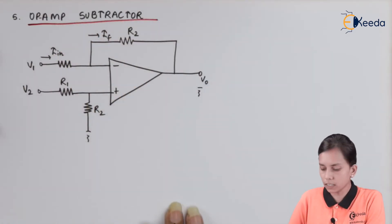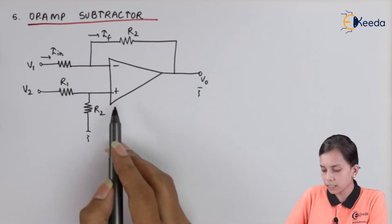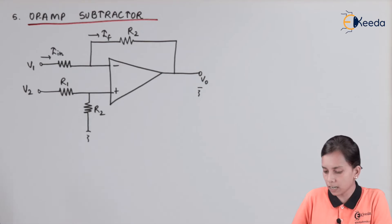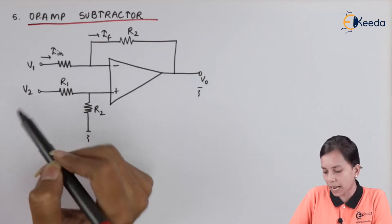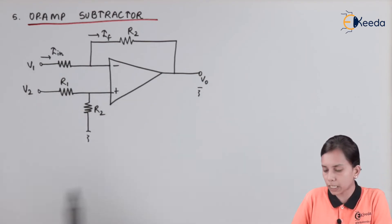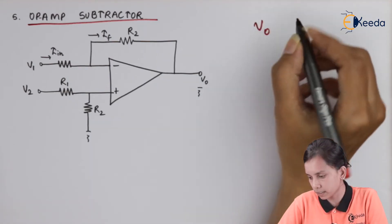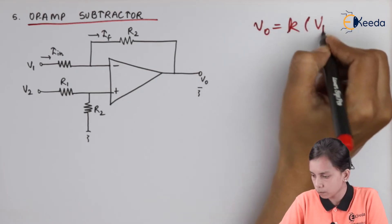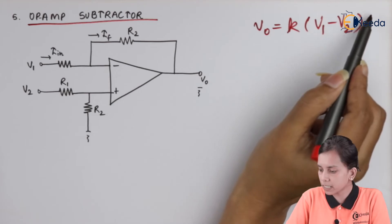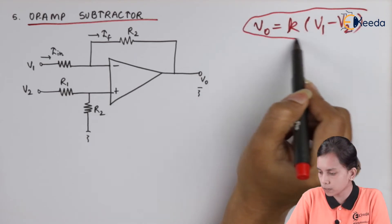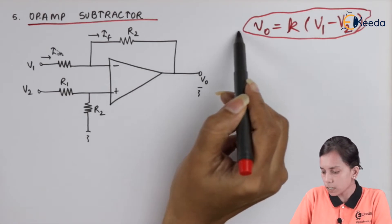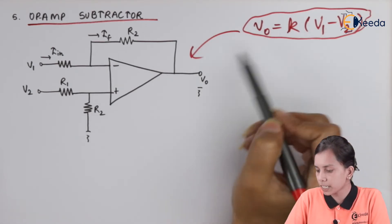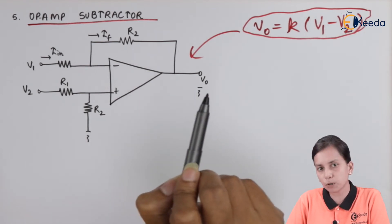Op-amp subtractor — this is the circuit diagram. In this circuit we are connecting two resistors, and two voltages V1 and V2 are applied, so that we can get an output of the form V0 = k(V1 minus V2). This is basically our purpose: we want the circuit to perform subtraction of the two input voltages.